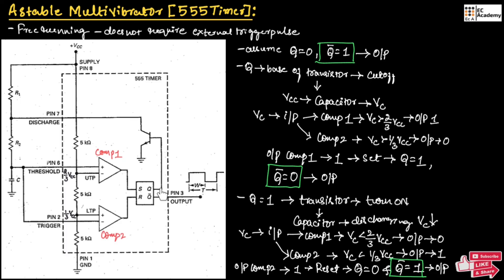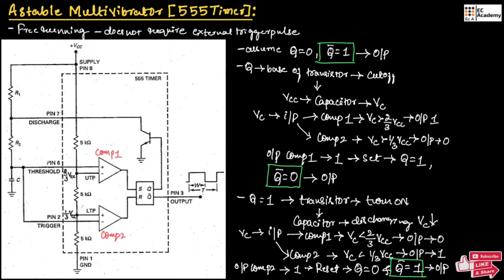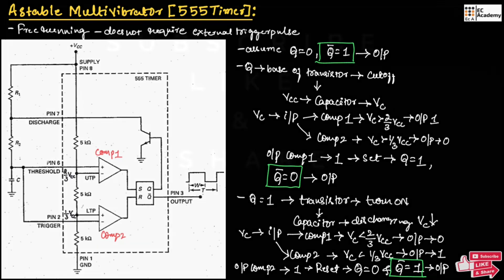Now Q equals 0, which will turn off the transistor. Since the transistor is turned off, the voltage applied to the circuit will again appear across the capacitor and the capacitor will start charging. This process will continue and we will get an oscillating output across the 555 timer. This is about the astable multivibrator using the 555 timer. Hope you have understood the topic. Thank you.